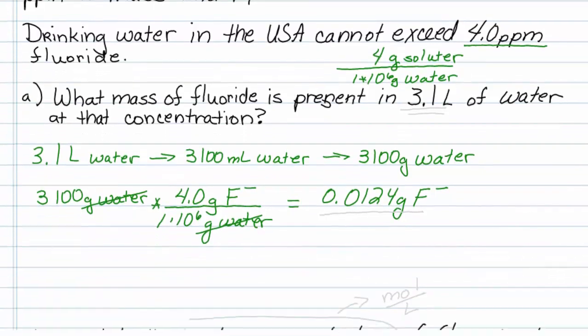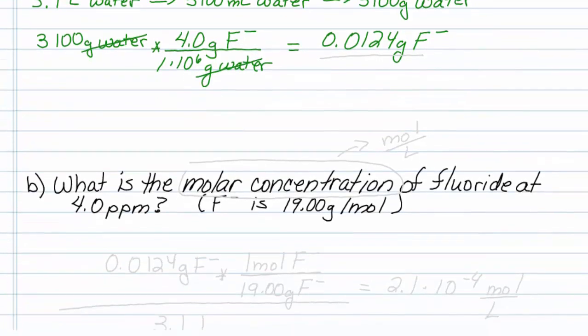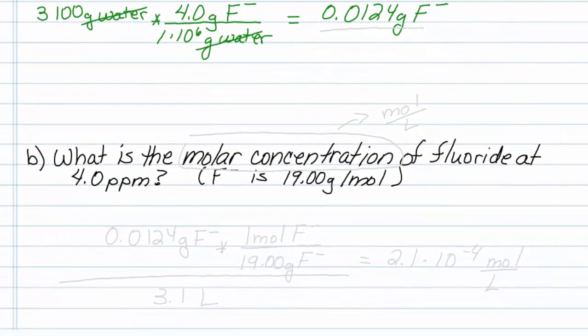The next question asks us to get parts per million essentially in molarity, which is a chemistry unit, so it asks us the molar concentration of fluoride when it's 4 parts per million.